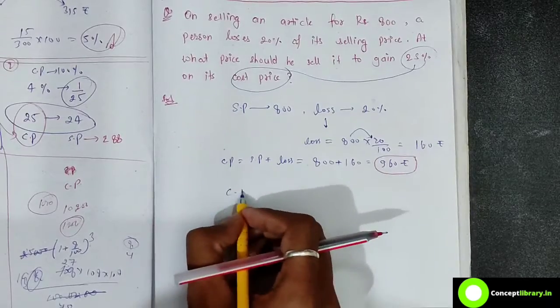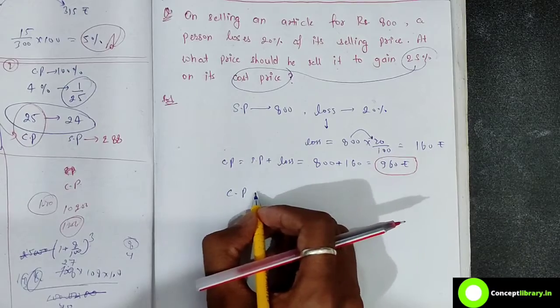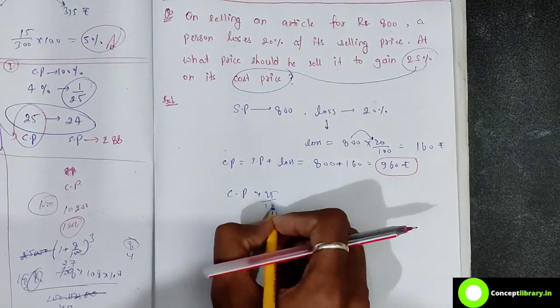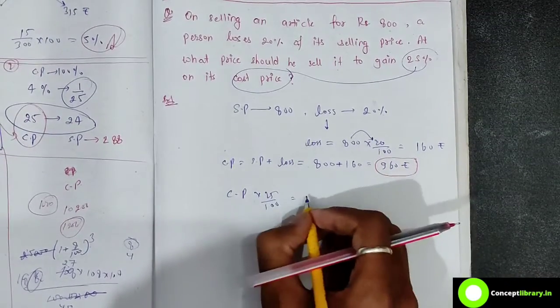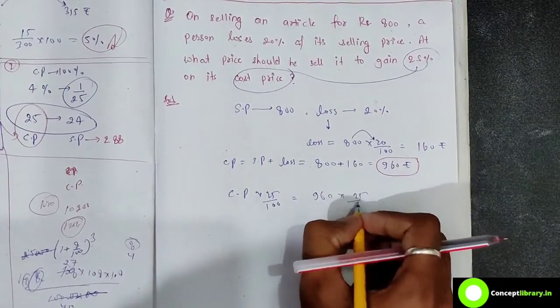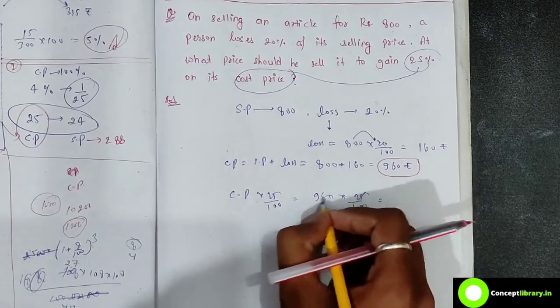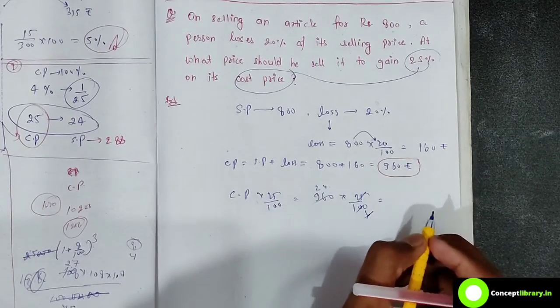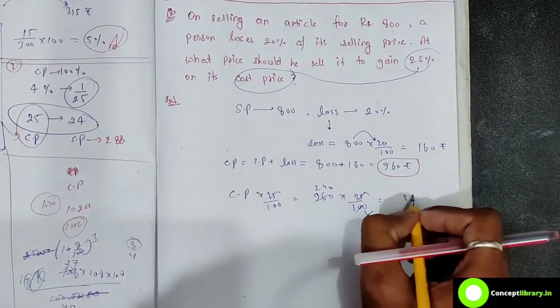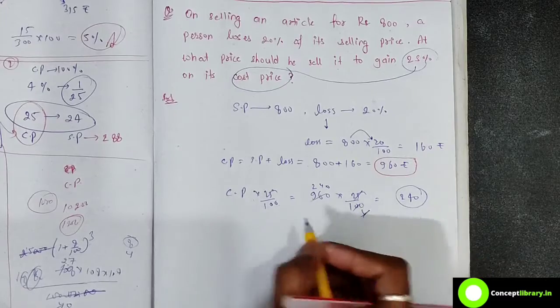Cost price - I got 960. 240 is the profit.